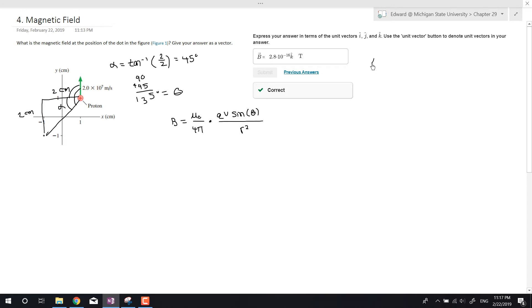And then mu naught, that's a constant. Mu is equal to 1.257 times 10 to the negative 6 tesla meter over amp. So let's go ahead and plug it in the equation here.